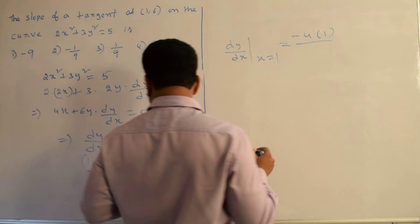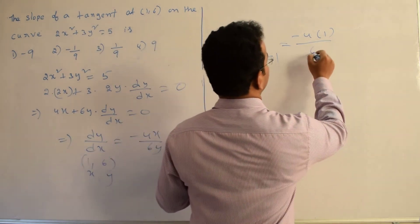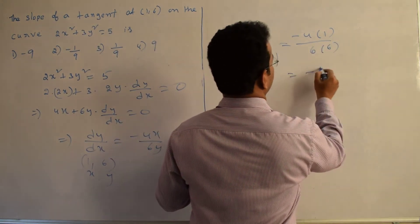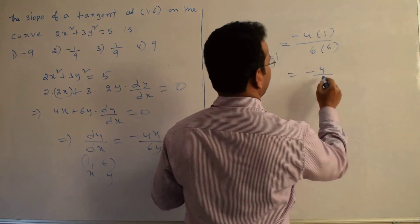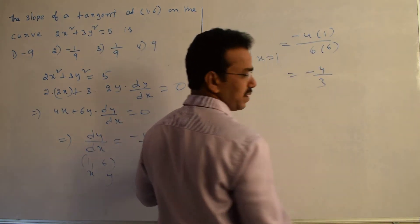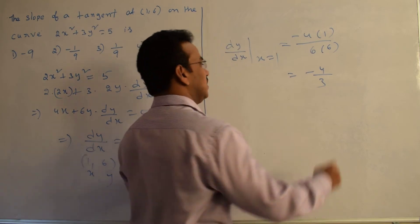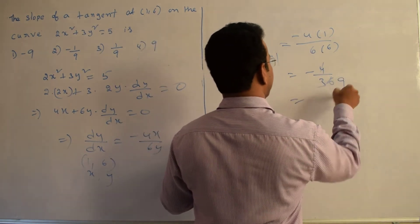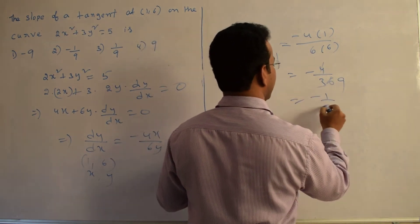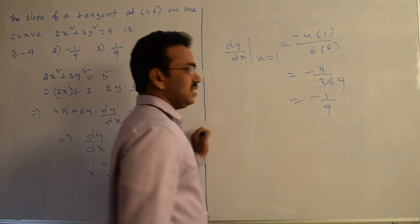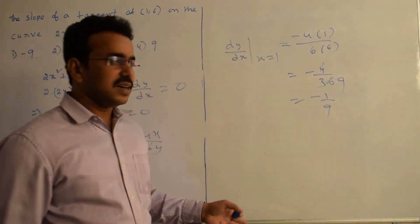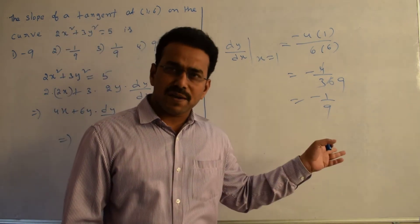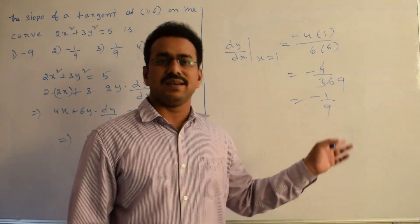Substituting: minus 4 divided by 36, which equals minus 1 by 9. This is the required slope at the point (1, 6).